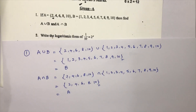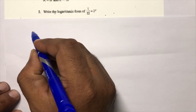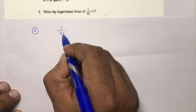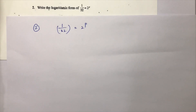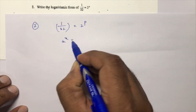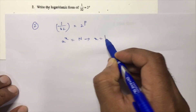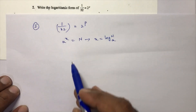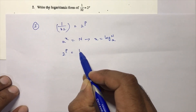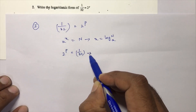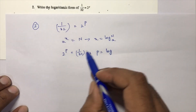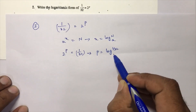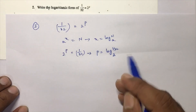The second question asks us to write in logarithmic form: 2 power p equals 1 by 32. The definition of logarithm is: if a power x equals n, then x is said to be log n to the base a. Here in place of a power x we have 2 power p equals 1 by 32, so in logarithmic form: p equals log (1/32) to the base 2.